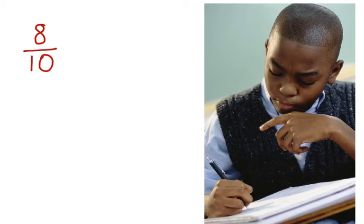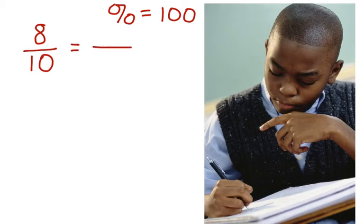Well, first, to work with a percent, we know that percent means out of 100. So, here we have 8 out of 10. We are going to write a proportion. Since it's out of 100, we're going to put 100 as our denominator. 10 times what gives me 100? 10 times 10 gives me 100.